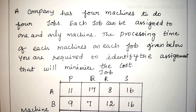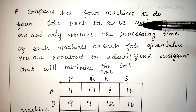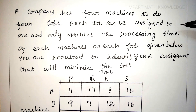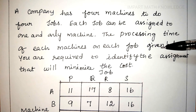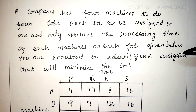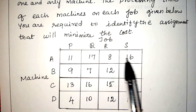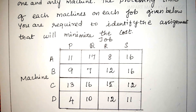Now let me explain the assignment technique with an example. A company has four machines to do four jobs. Each job can be assigned to one and only one machine. The processing time of each machine on each job is given below. You are required to identify the assignment that will minimize the cost and find the optimum assignment schedule.